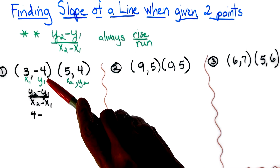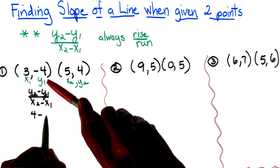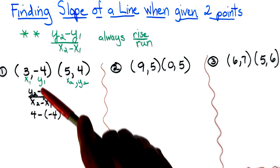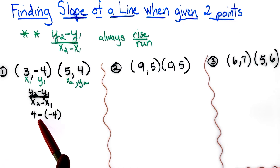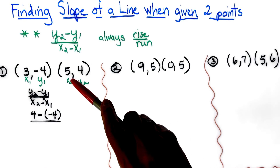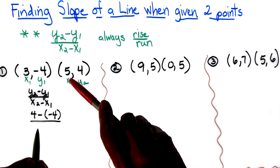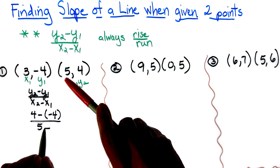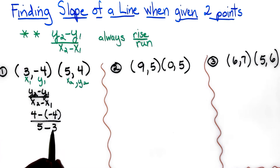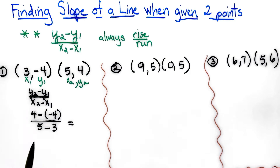Here I see that y2 is 4, so I'm writing 4, and here's my subtraction sign. Y1 is actually a negative 4, so notice my subtraction sign and negative 4 over my x2 which is 5, minus a 3.